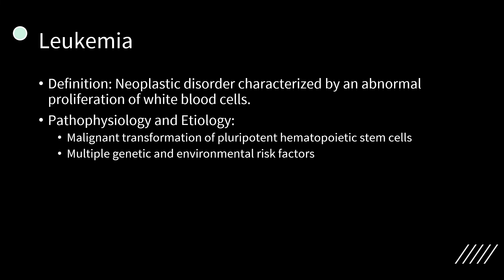Leukemia is a neoplastic disorder characterized by abnormal proliferation of white blood cells. It occurs due to malignant transformation of pluripotent hematopoietic stem cells that can give rise to both myeloid and lymphoid precursors. In acute leukemias, malignant cells are generally immature, poorly differentiated abnormal leukocytes that can be lymphoblasts or myeloblasts. These blasts undergo clonal expansion and proliferation, replacing and interfering with normal blood product development and function.